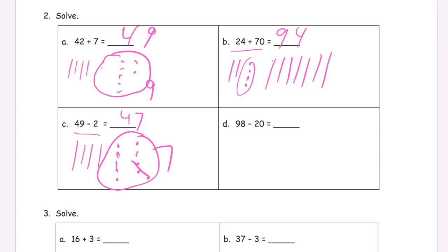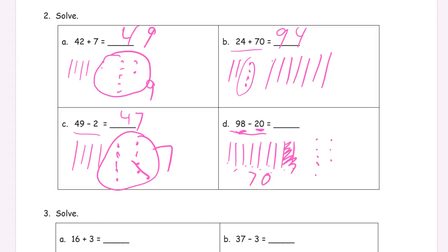That's just how you show your work — you've got to show this. Now some of these, like this one right here — 98 — I think you should still draw it. One, two, three, four, five, six, seven, eight, nine tens. You can count — you know it's nine tens because it's 10, 20, 30, 40, 50, 60, 70, 80, 90. And one, two, three, four, five, six, seven, eight ones. There's 98. And I cross out 20 — that's two tens. So now I have seven tens at 70. And then this is still eight because I didn't cross out any ones for 20. 78, just like that.